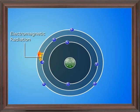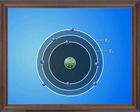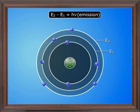If the electron jumps from an orbit of energy e2 to e1, e2 is greater than e1, then the energy of radiation is given by e2 minus e1 is equal to h nu, which is emission, that is equation 2.